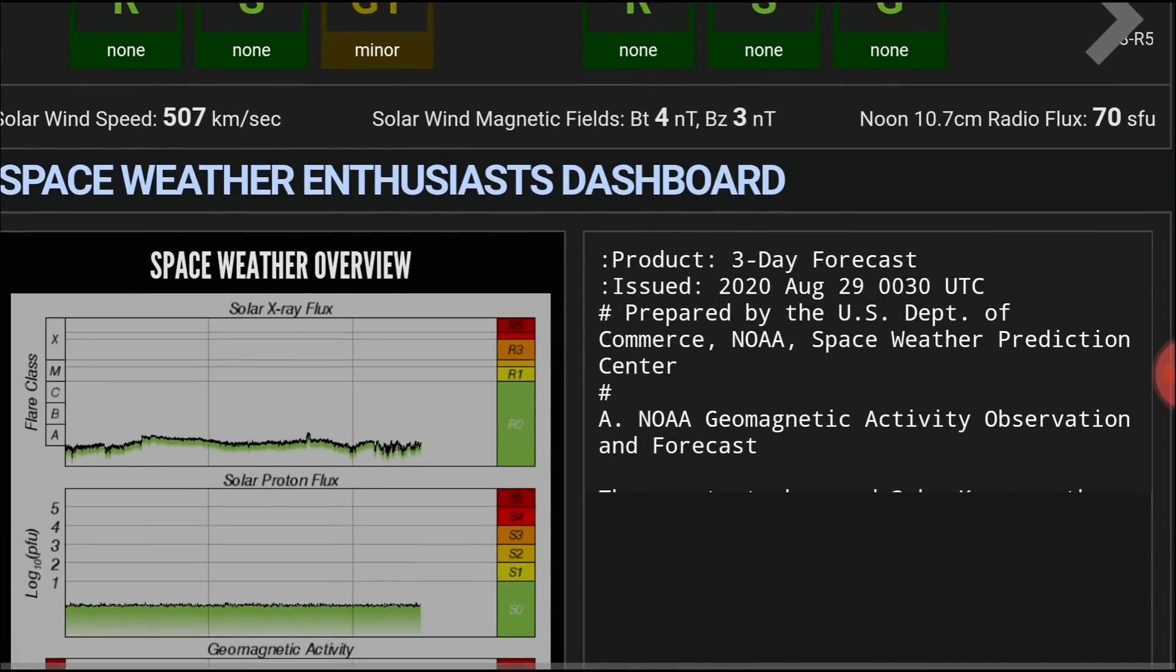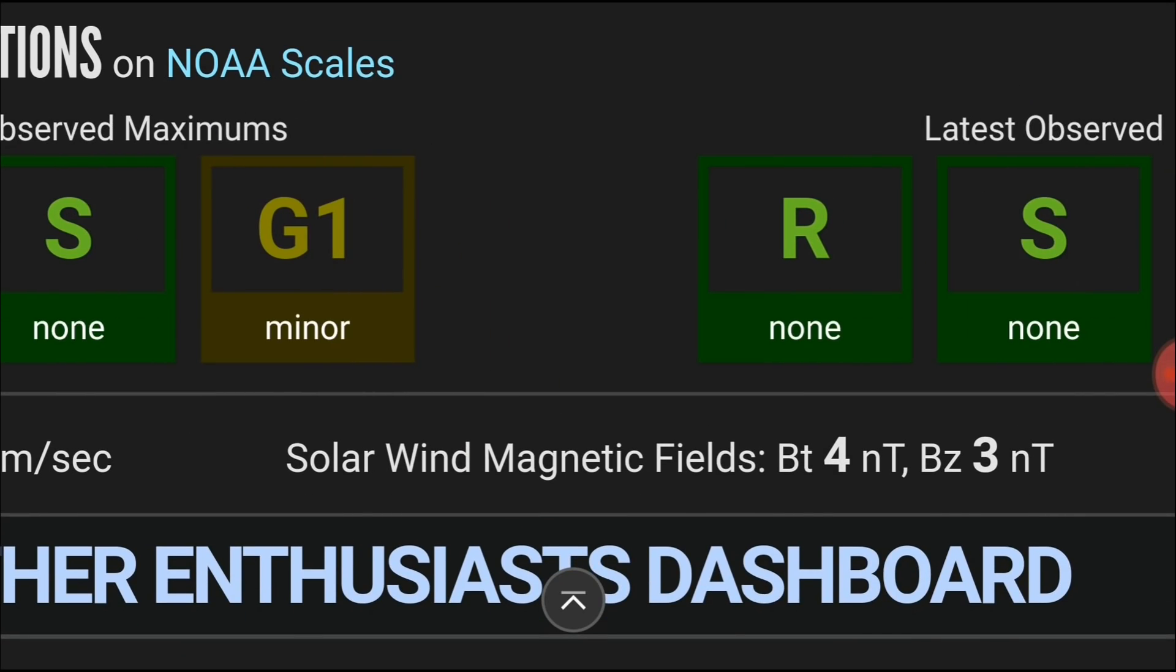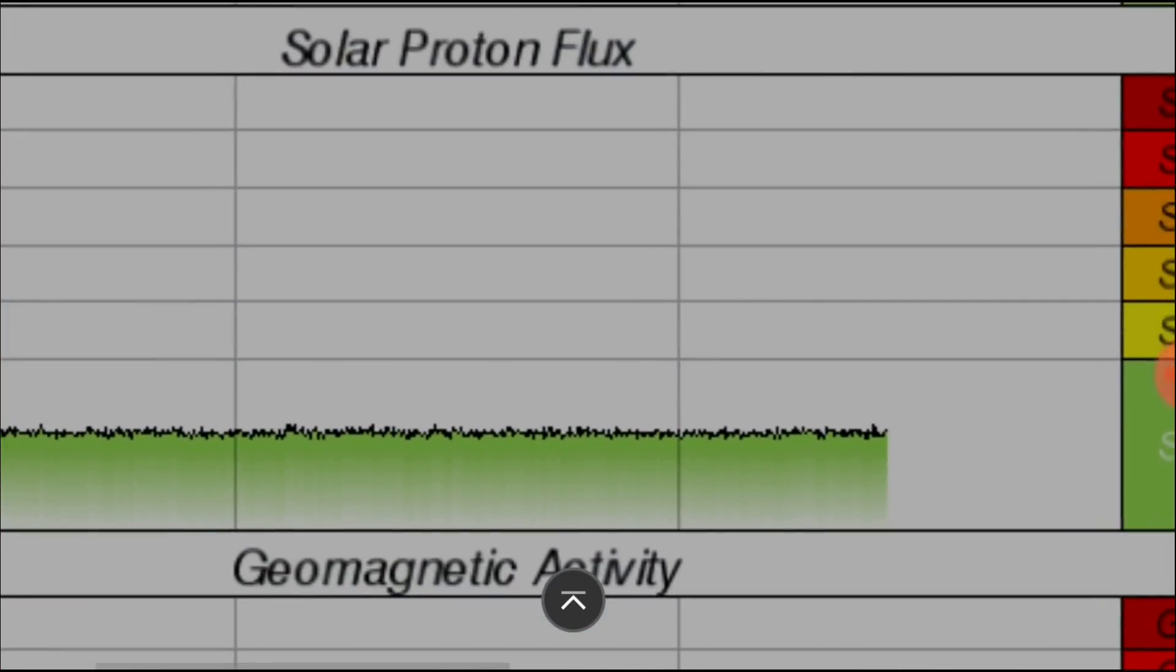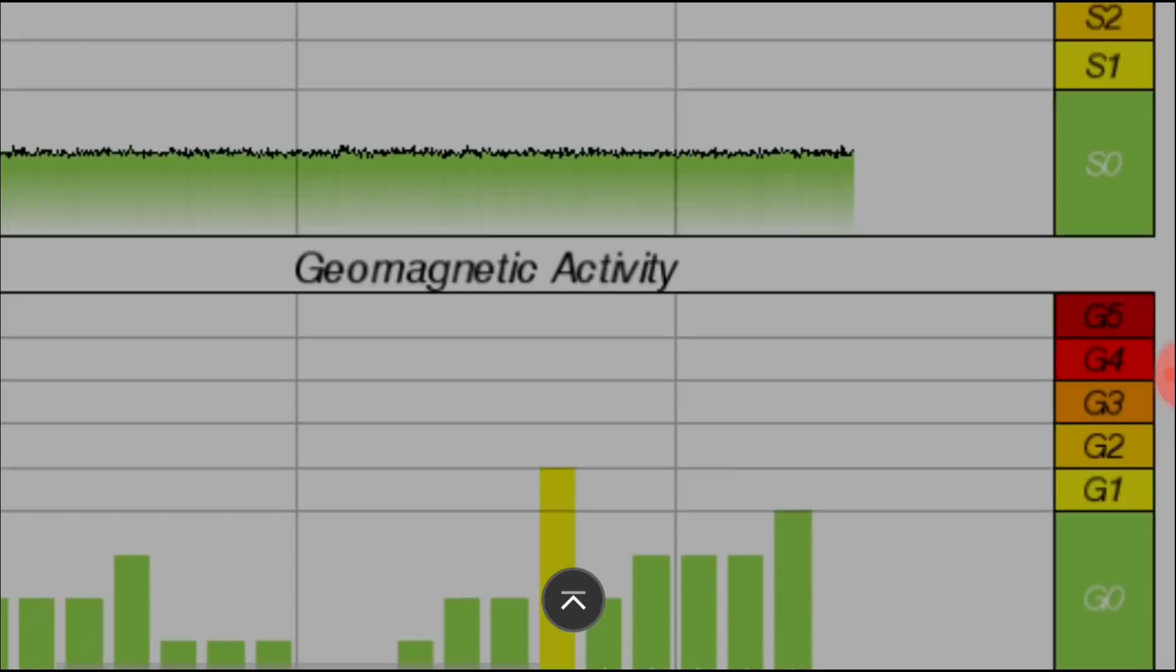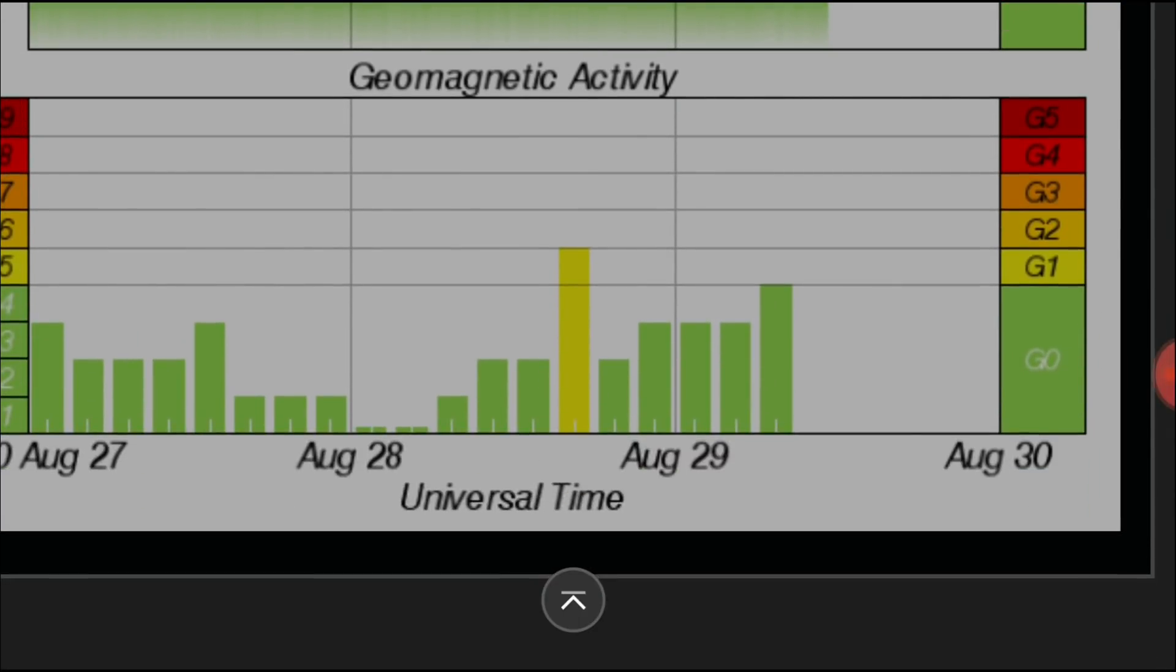But this time, it most certainly is a geomagnetic storm. You can see where it says G1. It's a very minor storm. What can we expect during that kind of a thing? Increased auroras and probably upticks in earthquakes and volcano activity, seismic activity, basically.